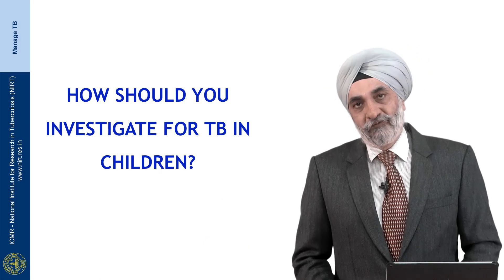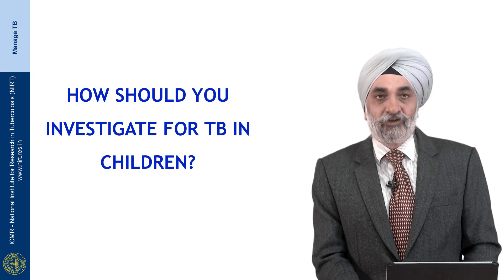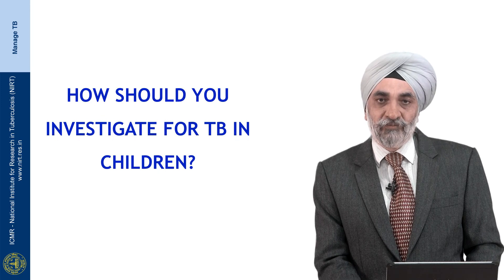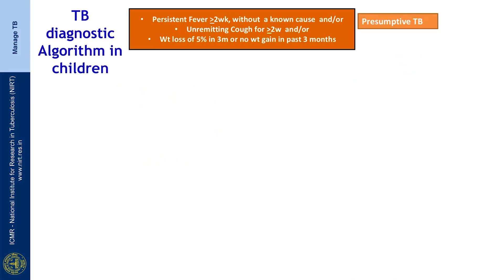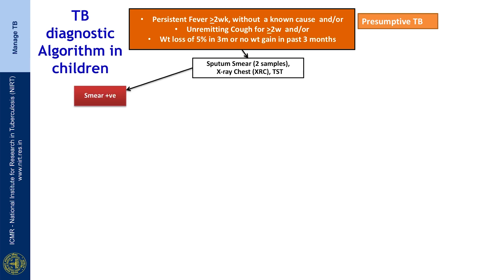Once you have identified a presumptive case, how do you investigate further? Starting with a presumptive case who has persistent fever more than 2 weeks without a known cause, and/or unremitting cough or weight loss — your initial attempt would be to get a microbiological diagnosis through sputum, which is easy to obtain in an older child but not in a younger child. A spontaneously expectorated sputum, a chest X-ray, and a tuberculin skin test are among the first TB-specific investigations. If this comes out smear positive, this is a bacteriologically confirmed TB case.